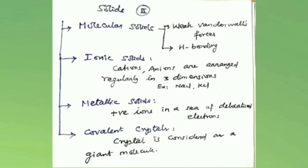Metallic crystals consist of orderly arranged metal atoms in a sea of free electrons. These electrons hold the metal atoms together. Metals are rigid and possess high melting points due to strong metallic bonds. Due to the presence of free electrons, they are good electrical conductors. They are also lustrous, opaque, malleable, and ductile. Examples include copper, aluminum, iron, etc.